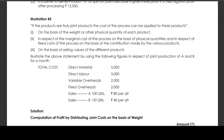Illustrate the above statement using the following figures in respect of joint production of A and B for a month. Total cost: direct material Rs. 5,000, direct labor Rs. 3,000, variable overheads Rs. 2,000, fixed overhead Rs. 2,000. Sales for A: 100 quintals sold at Rs. 80 per quintal. For B: 150 quintals at Rs. 40 per quintal.